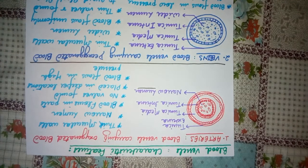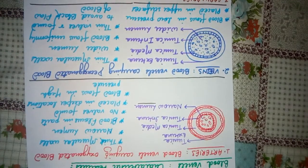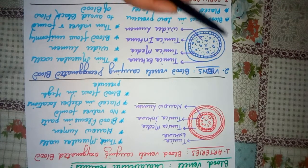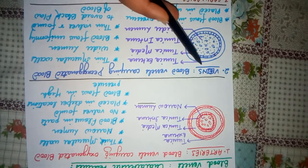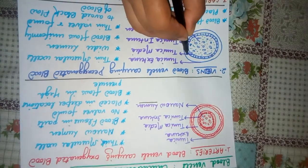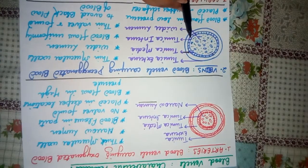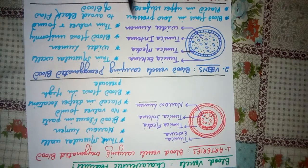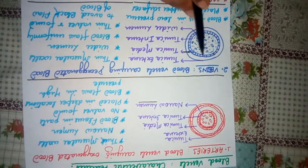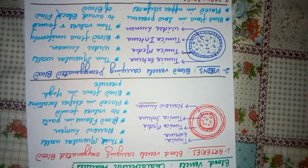Next we will talk about veins. Veins carry oxygen-deficient blood. You can see it here — the external layer is tunica externa, the middle layer is called tunica media, and the internal layer is called tunica interna. You can see the lumen; it is very broad and is called a wider lumen.